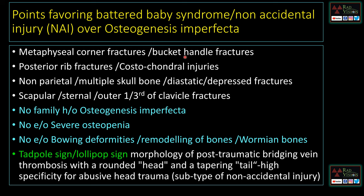Points favoring battered baby syndrome include: metaphyseal corner fractures or bucket-handle fractures, posterior rib fractures (posterior ends of ribs), and costochondral junction injuries. Non-parietal bone fractures, multiple skull fractures, diastatic fractures, depressed fractures, and scapular, sternal, and outer one-third clavicle fractures are also more common. There will be no family history of osteogenesis imperfecta, no history of severe osteopenia, and no evidence of bowing deformities, remodeling of bones, or wormian bones.